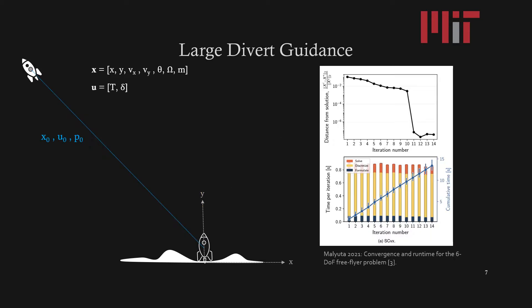This graph shows the convergence and runtime for the six degree of freedom free flyer problem which is solved with SCP methods. And as you can see at about iteration 10 to 11, the distance from the solution converges very rapidly.